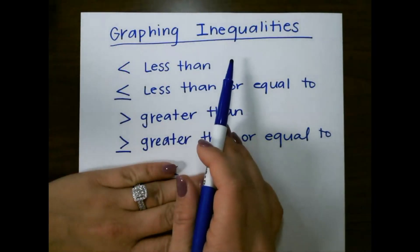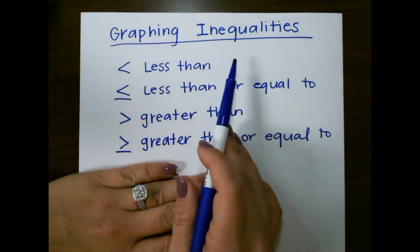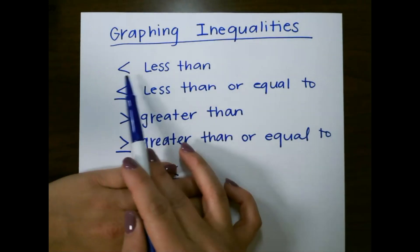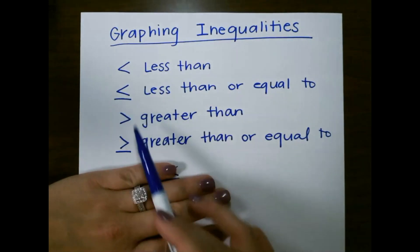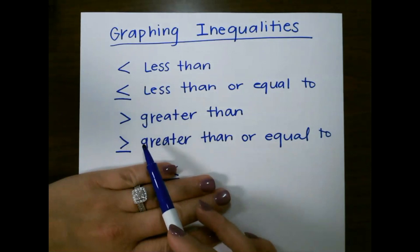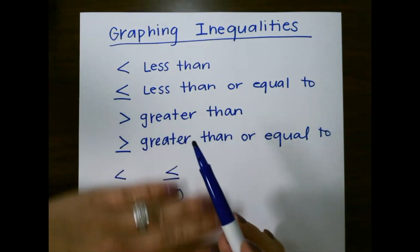Graphing inequalities on a number line. To review, our symbols are less than, less than or equal to, greater than, and greater than or equal to.